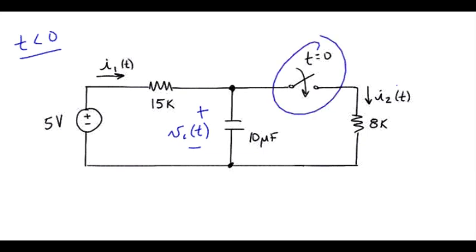The switch here is open before T equals zero, so let me replace that by an open. We see that we've got zero current for I2 when T is less than zero. That will be important later when we're trying to come up with our full solution.